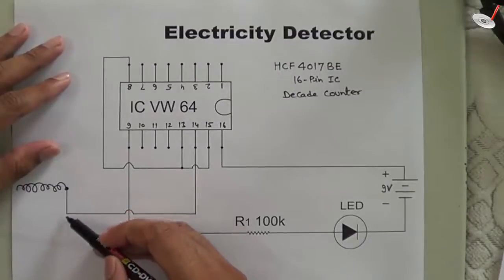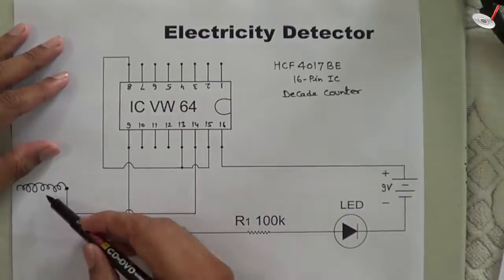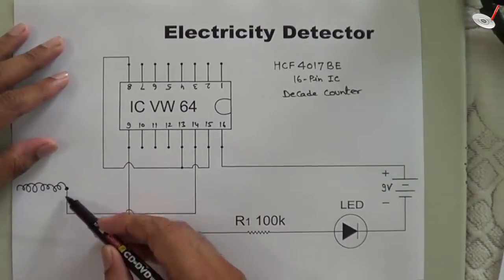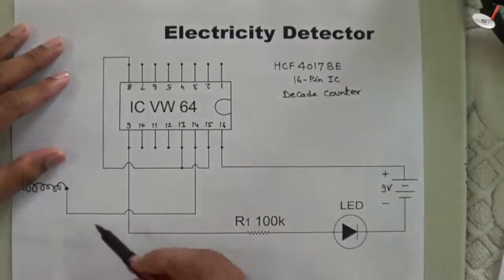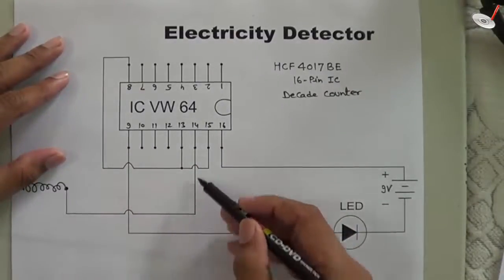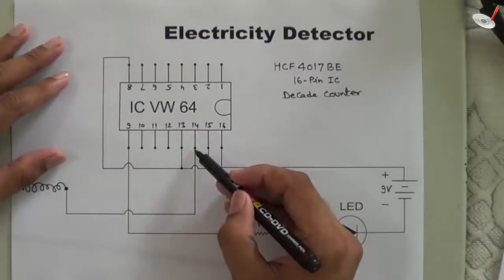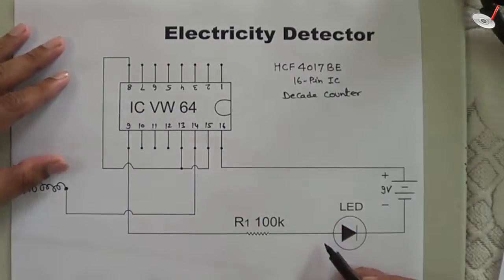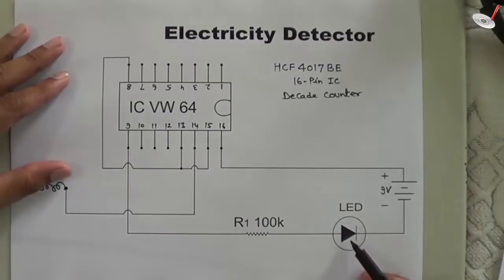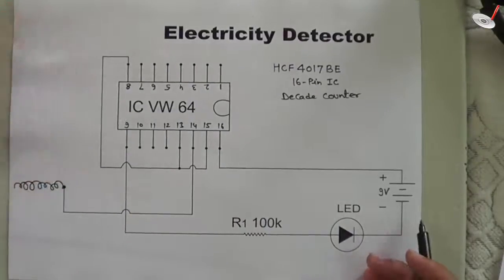of an electric circuit or electric line, then some disturbances start occurring in the clock pulse that is applied on pin number 14. According to that, the output starts varying, which comes in the form of blinking of this LED. You can see